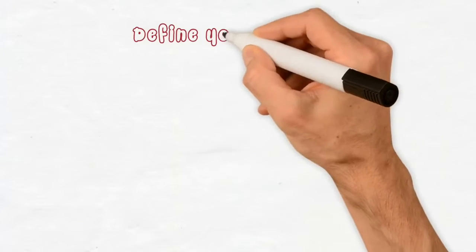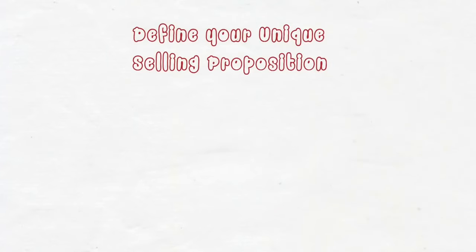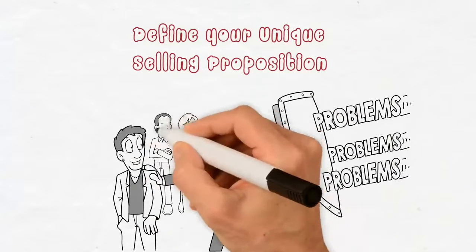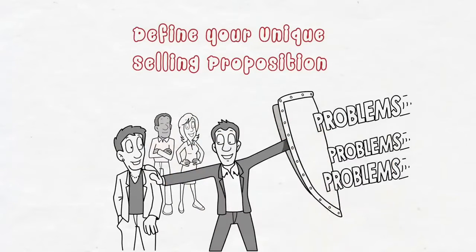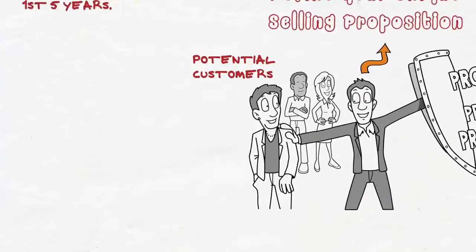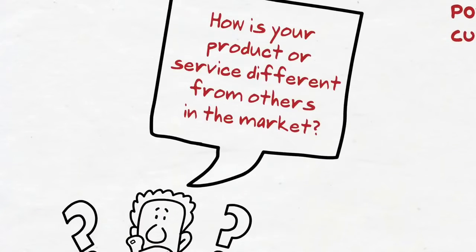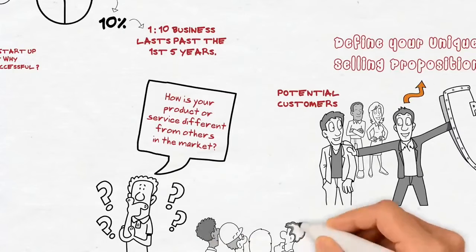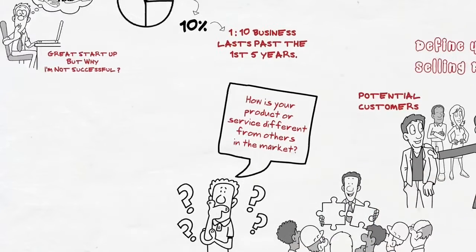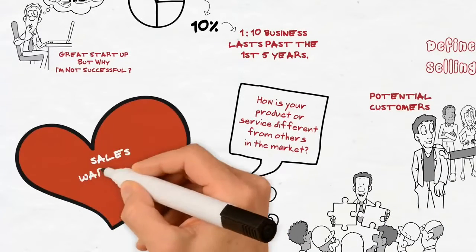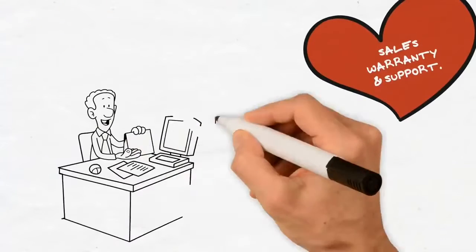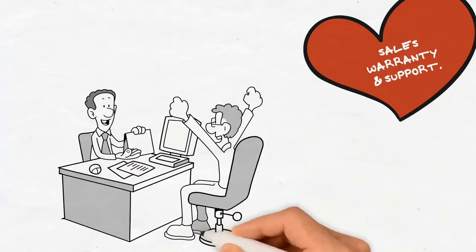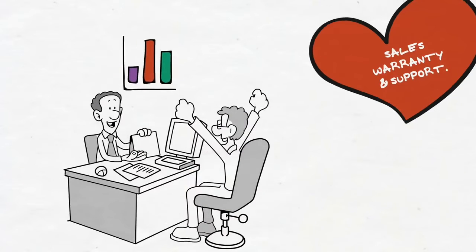Step 3: Define your unique selling proposition. What is it about you that is different from the crowd? Your unique selling point, or USP, will make you more attractive to potential customers. How is your product or service different from others in the market? It could be anything from additional services to personalized customer service. You could even offer them better after-sales warranty and support. While writing a business plan, you just need to highlight the extras that your customers are getting from you to make your business stand out.